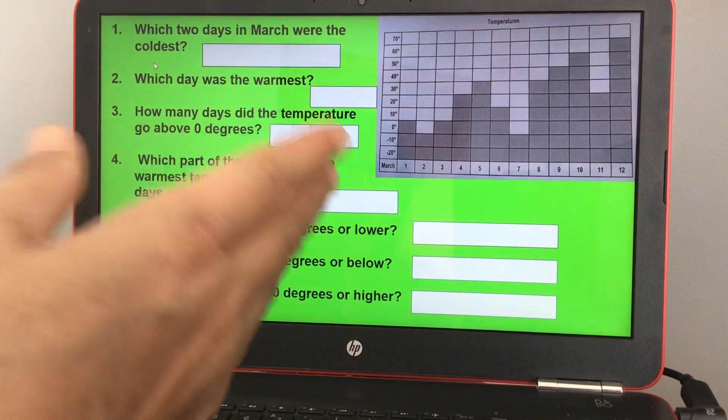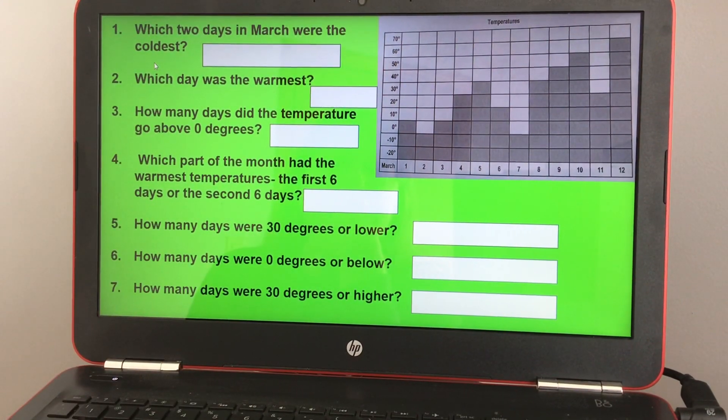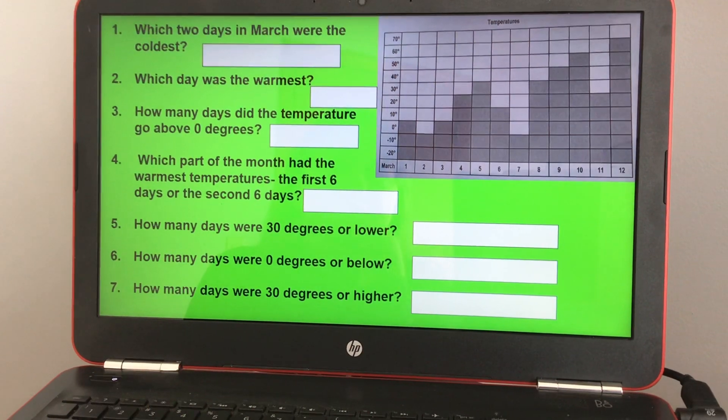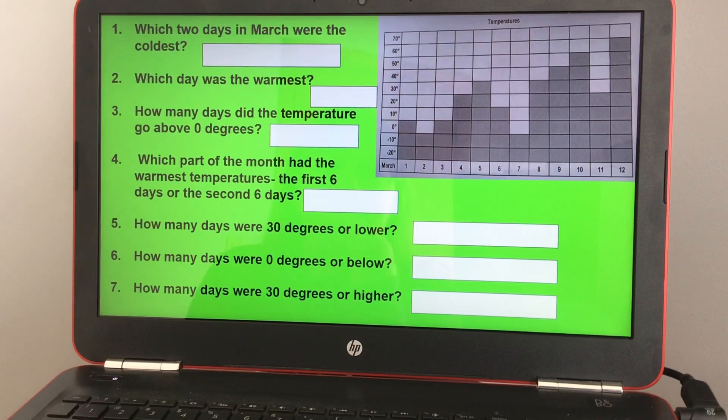Okay, so I'm gonna let you look at the graph and figure out your answers here. So number one, which two days in March were the coldest? Okay, so you look for the lowest, the smallest amount of boxes and go to that date. Number two, which day was the warmest? So it would be the tallest one, right, whatever day that was. So if they ask you which day, just put the date, so it'd be March whatever. Okay, number four, which part of the month had the warmest temperatures, the first six days or the second six days? And just look at the different temperatures of each day.